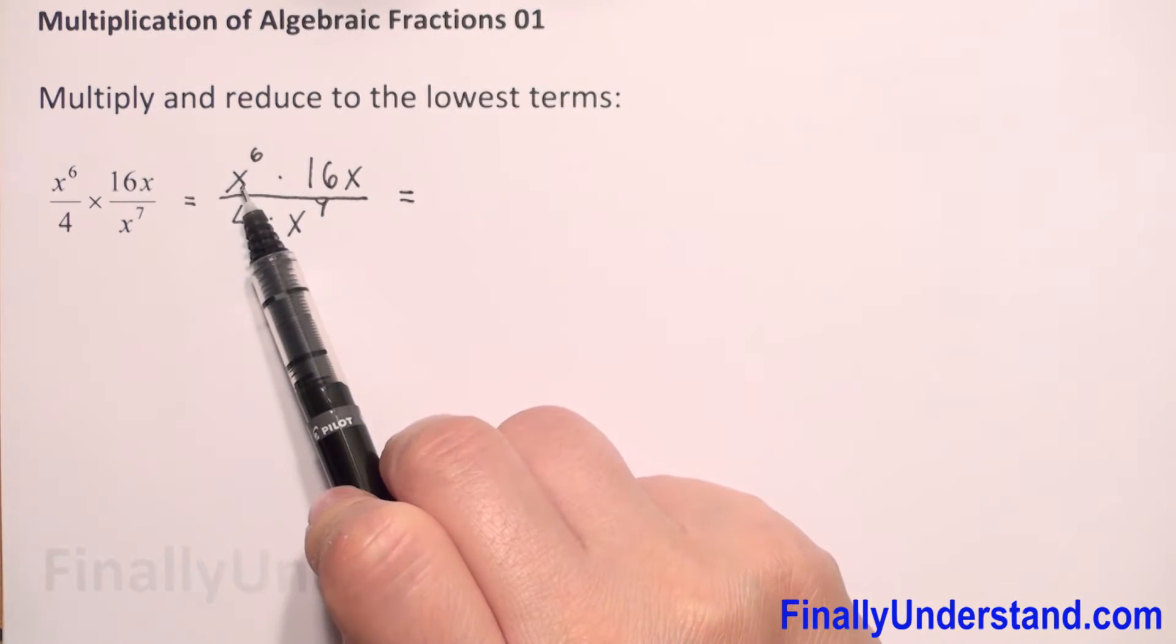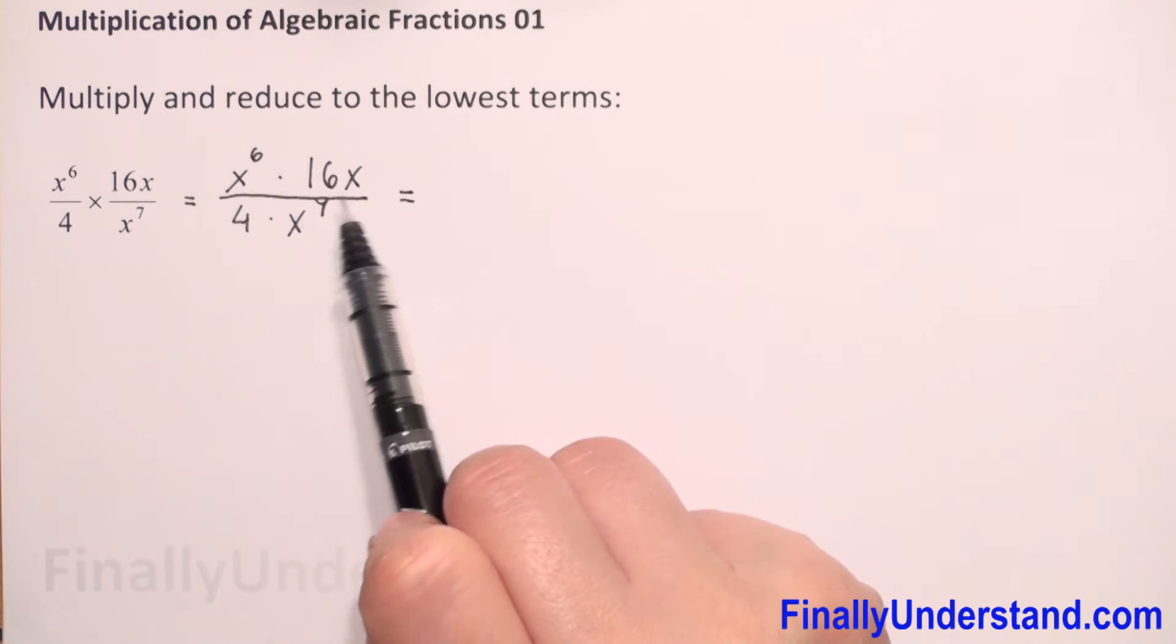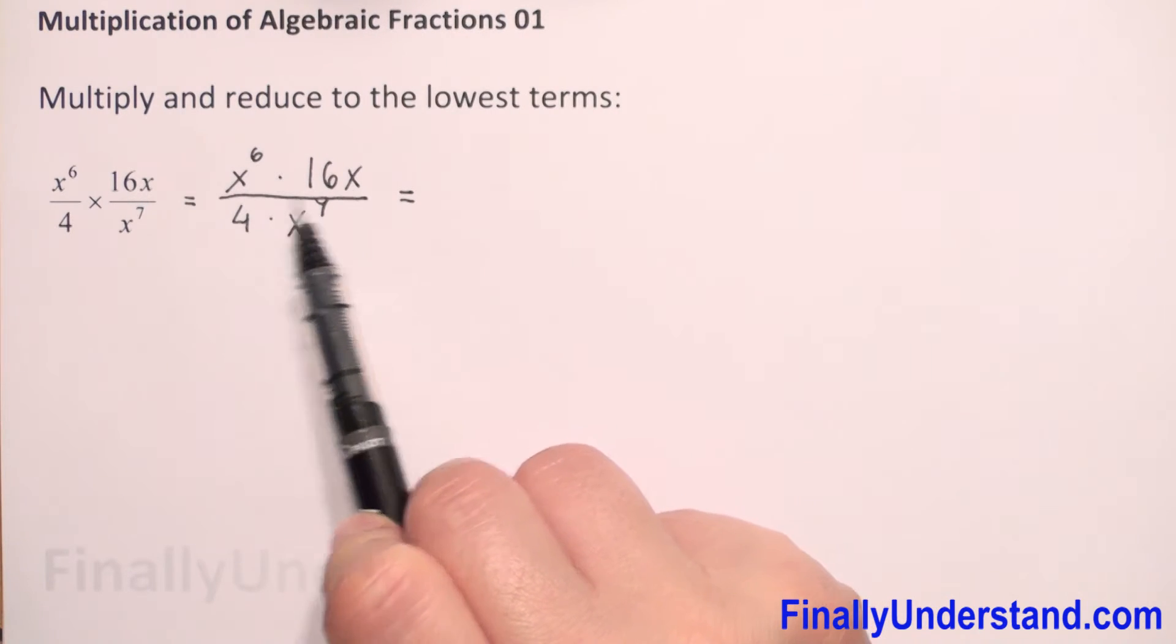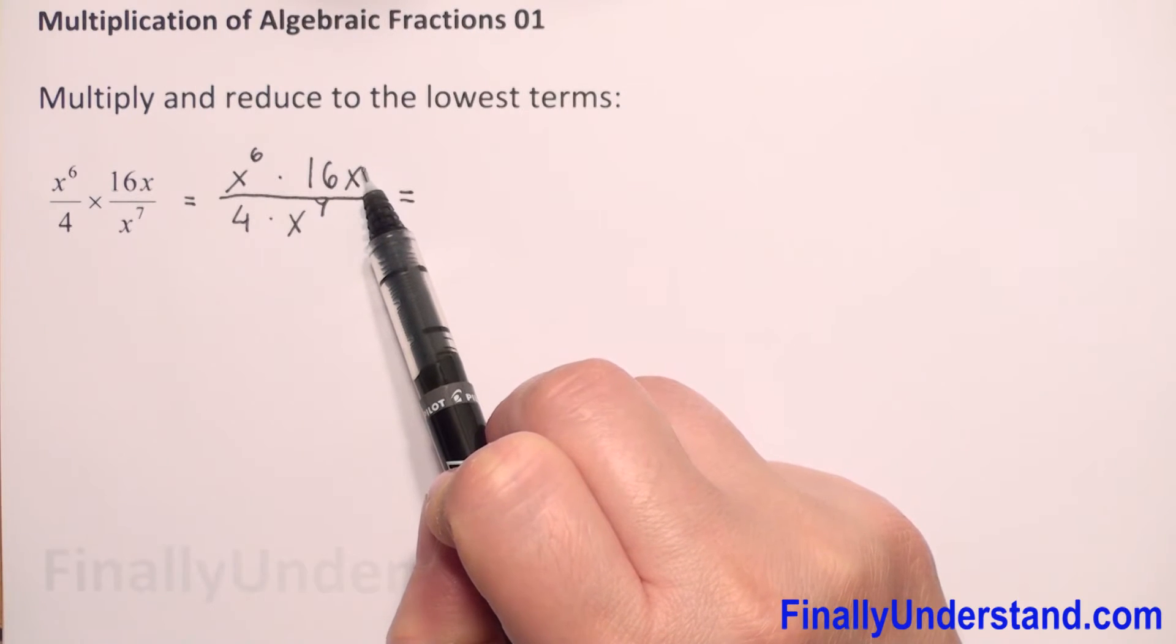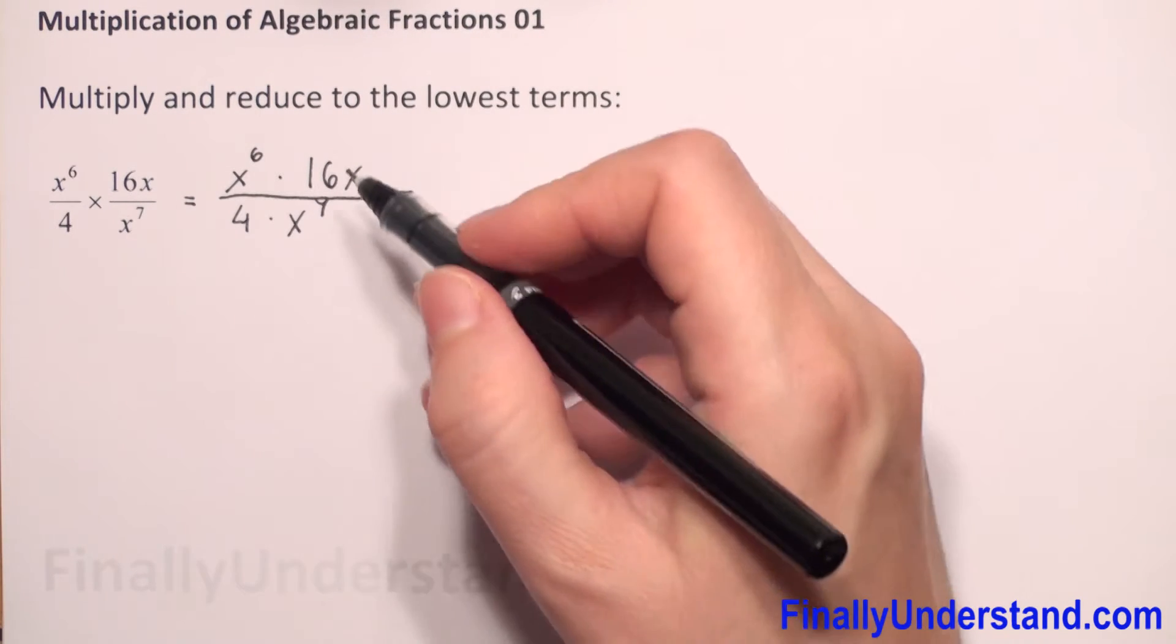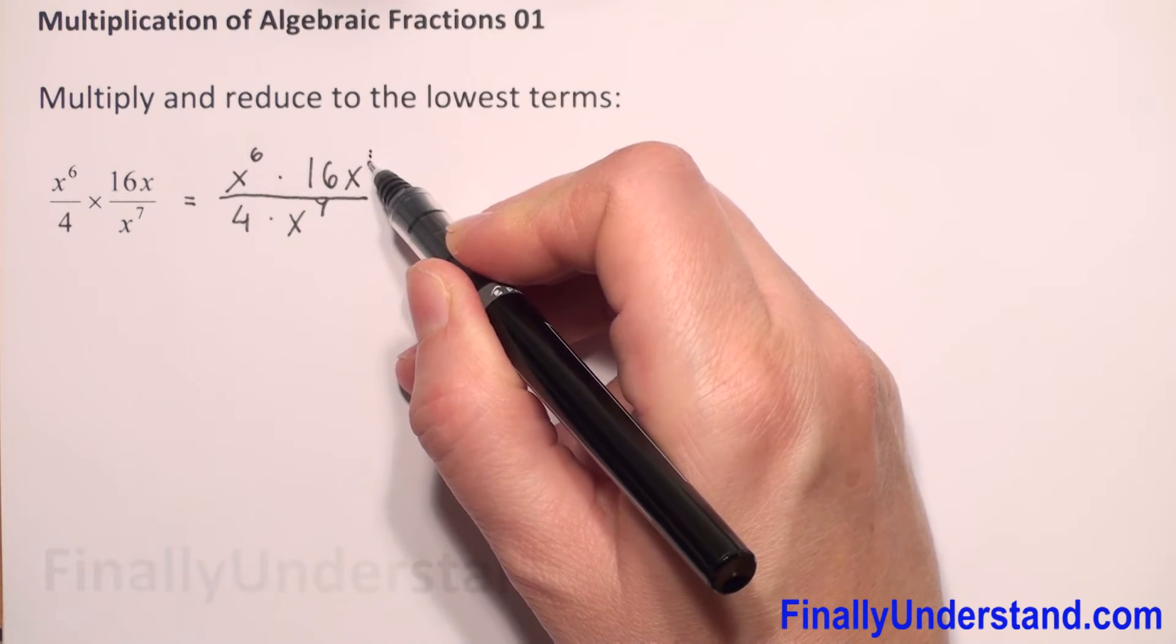when we have the same base, we copy the base and add the exponents. If we don't have an exponent, it means we have an invisible 1.